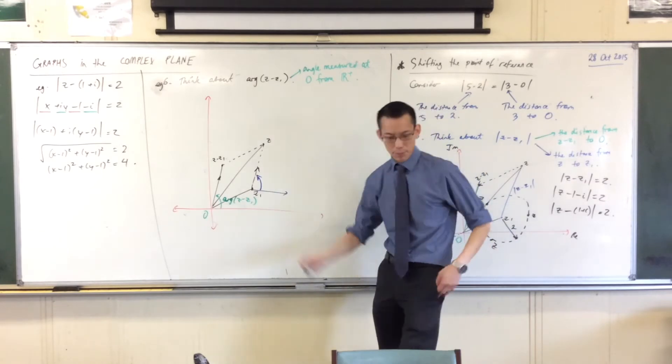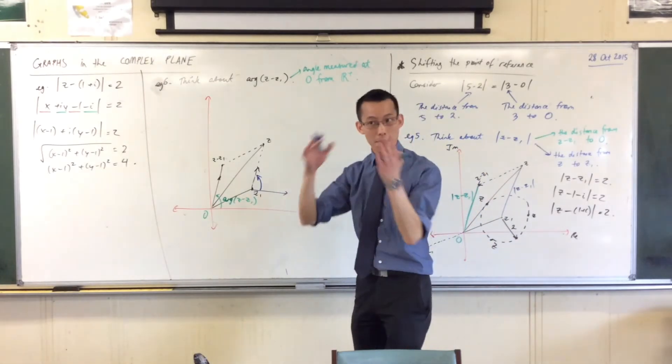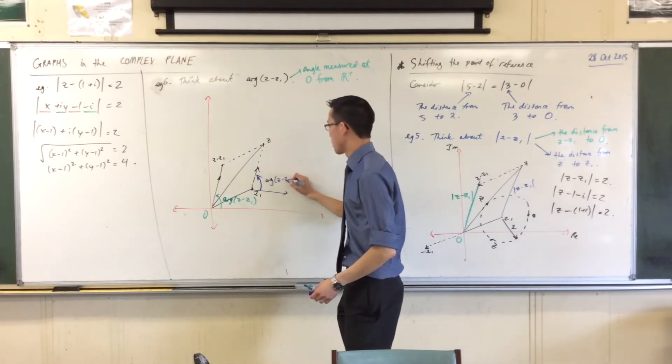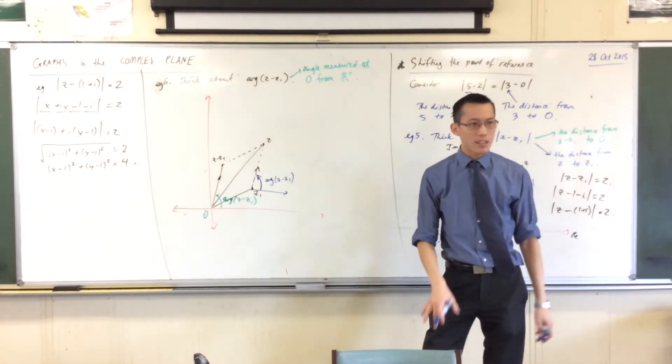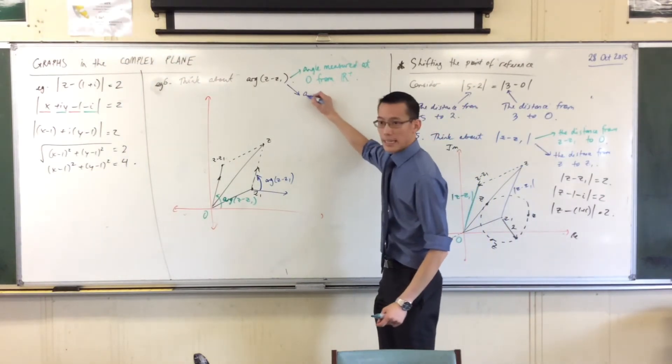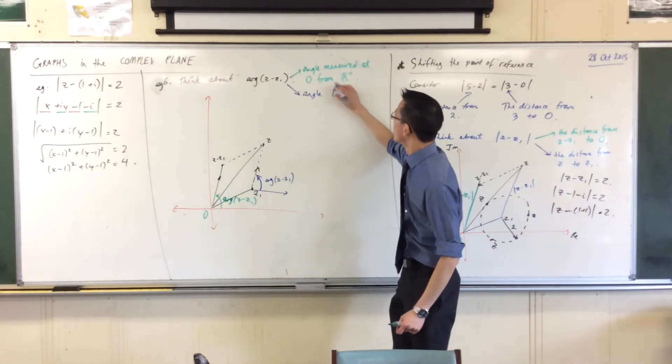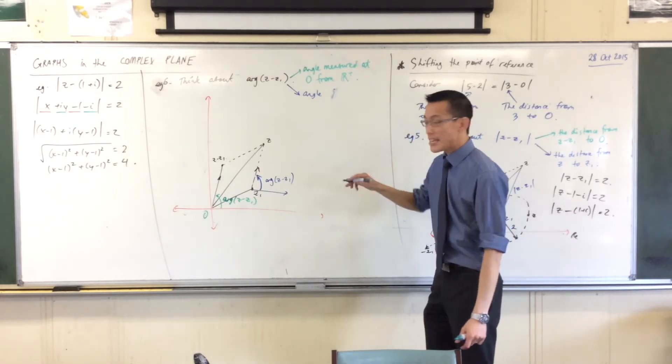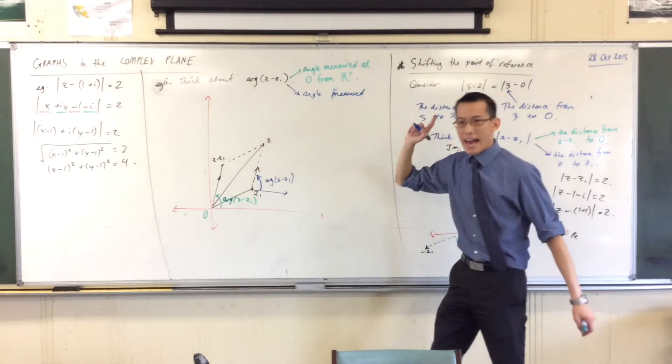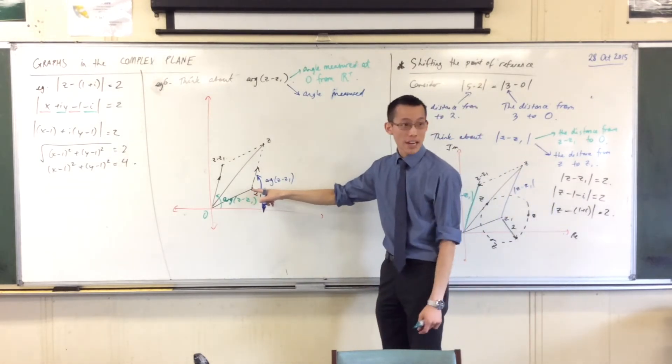But this guy in blue here, which is the same magnitude, or the same size I should say, that argument is the same angle there, has nothing to do with the origin, right? How would you word it? What angle is it? It's the angle measured at z1.